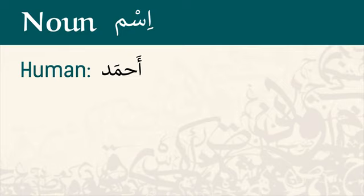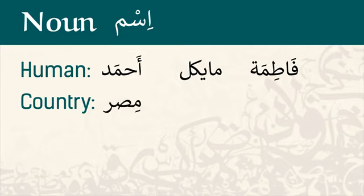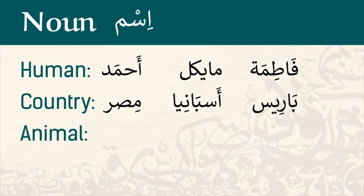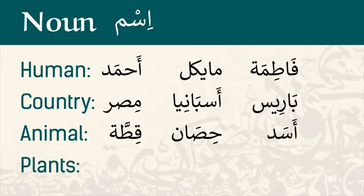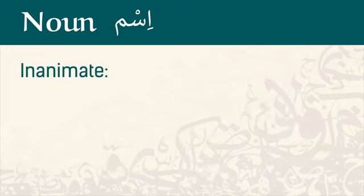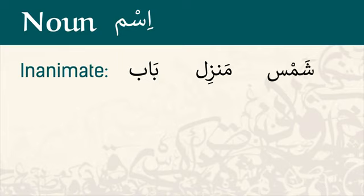By noun (ism) we mean any word that can be given as a name to a human, like Ahmed, Michael, and Fatima; a country or city, like Misr (Egypt), Aspania (Spain), and Paris; an animal, like qitta (a cat), hisan (a horse), and asad (a lion); even plants, like shajara (a tree) and zahra (a flower); or any inanimate object in general, like bab (a door), manzil (a house), and shams (the sun).